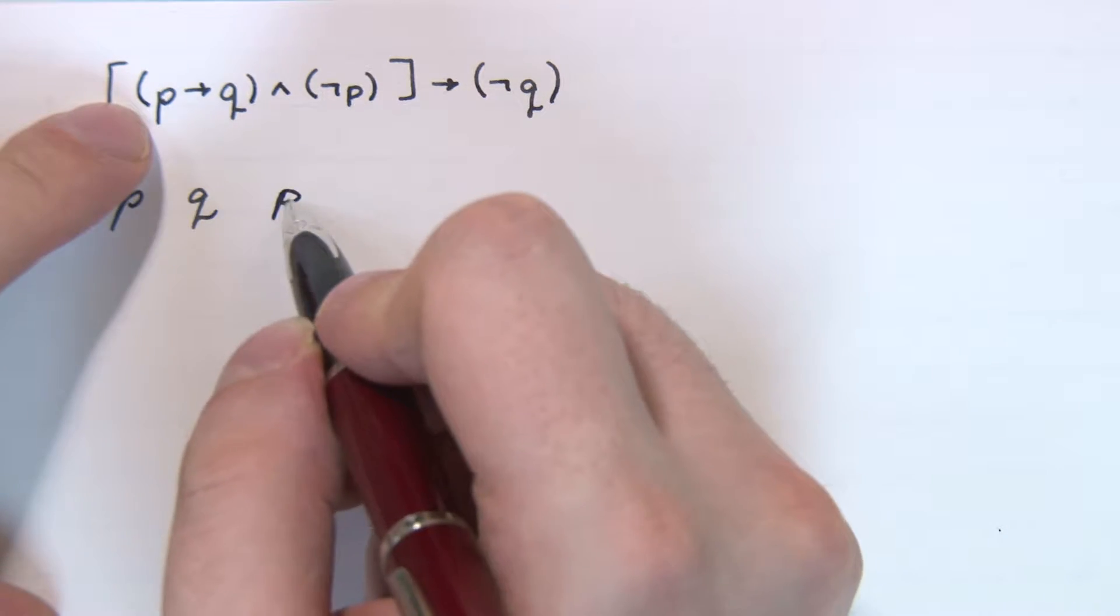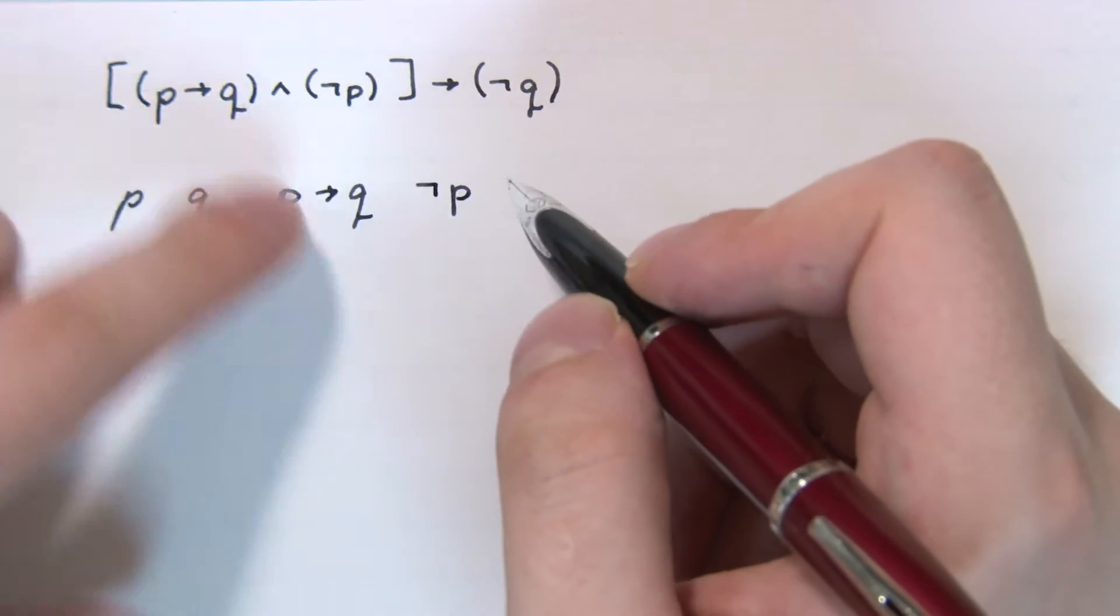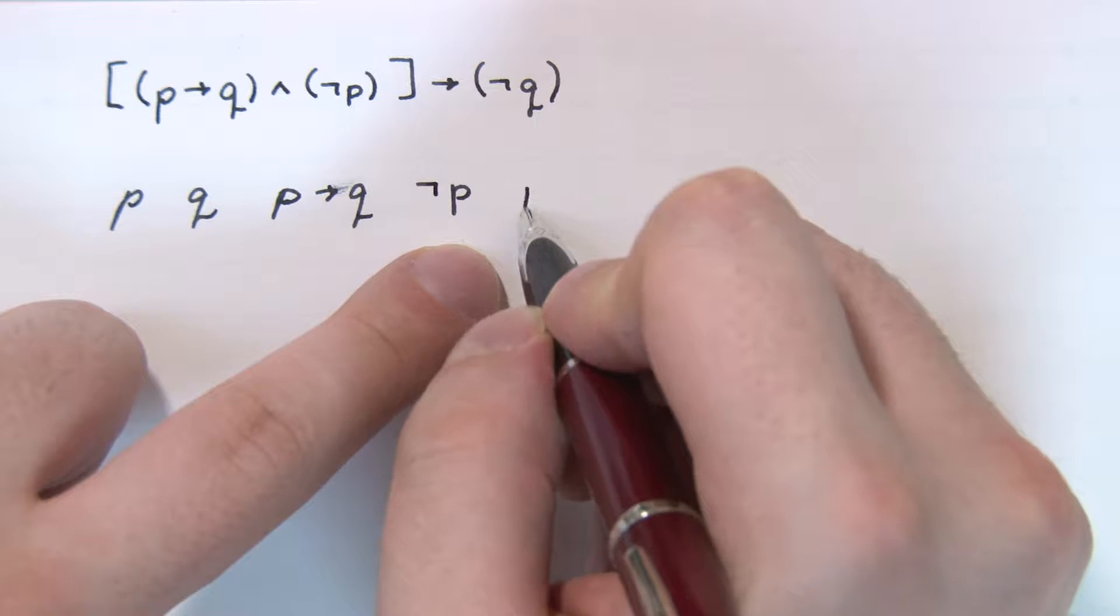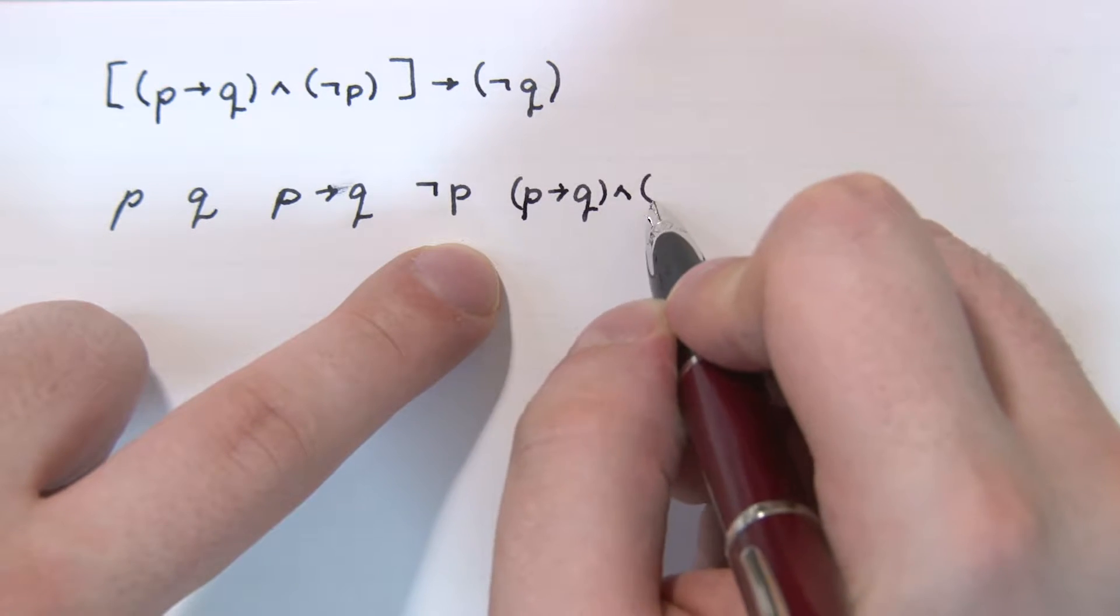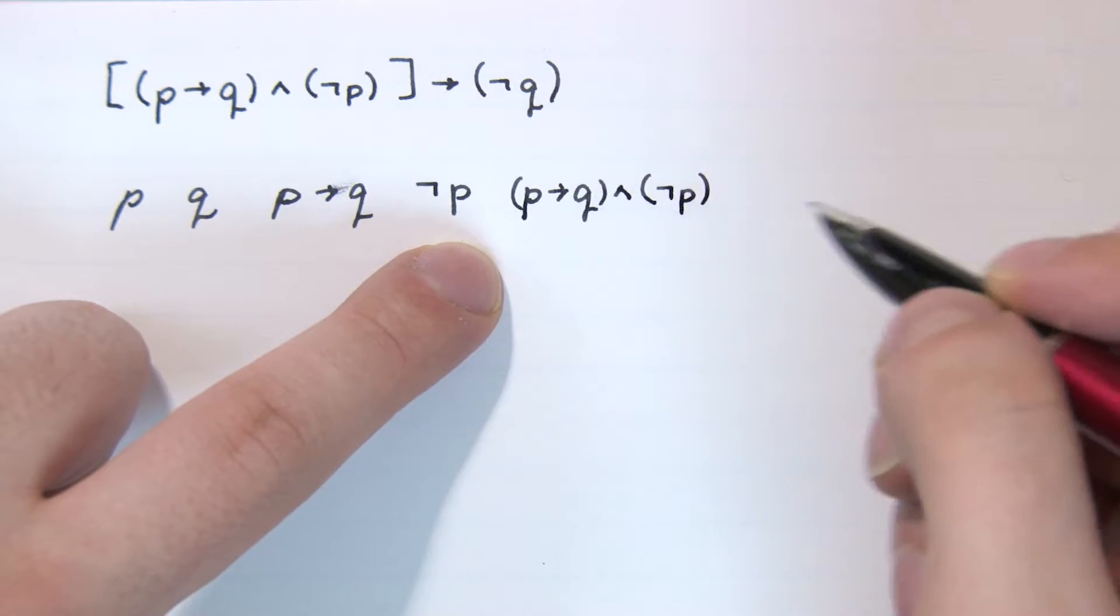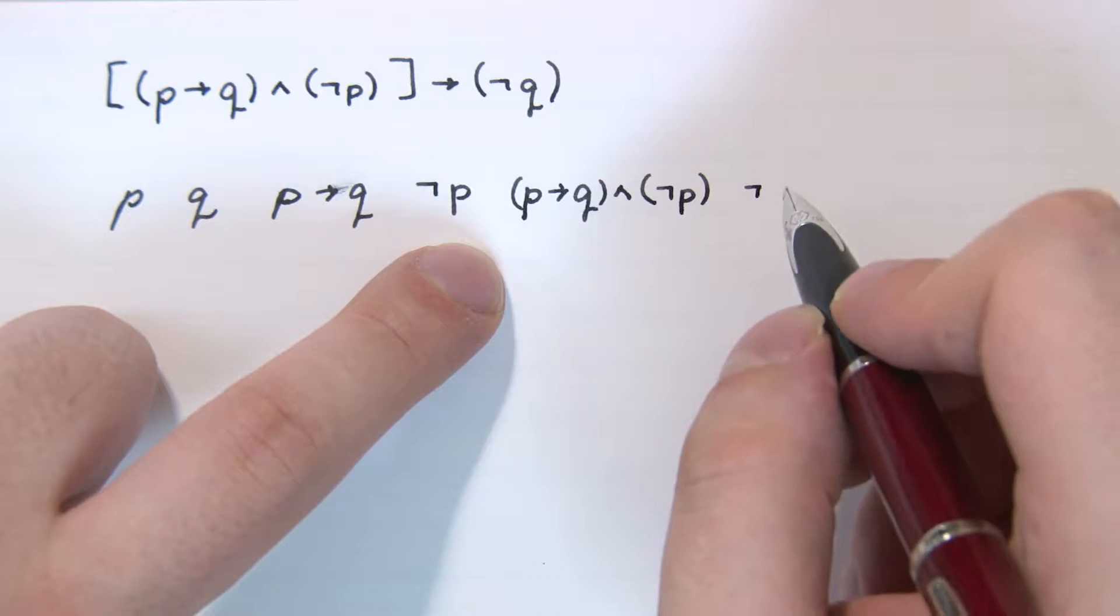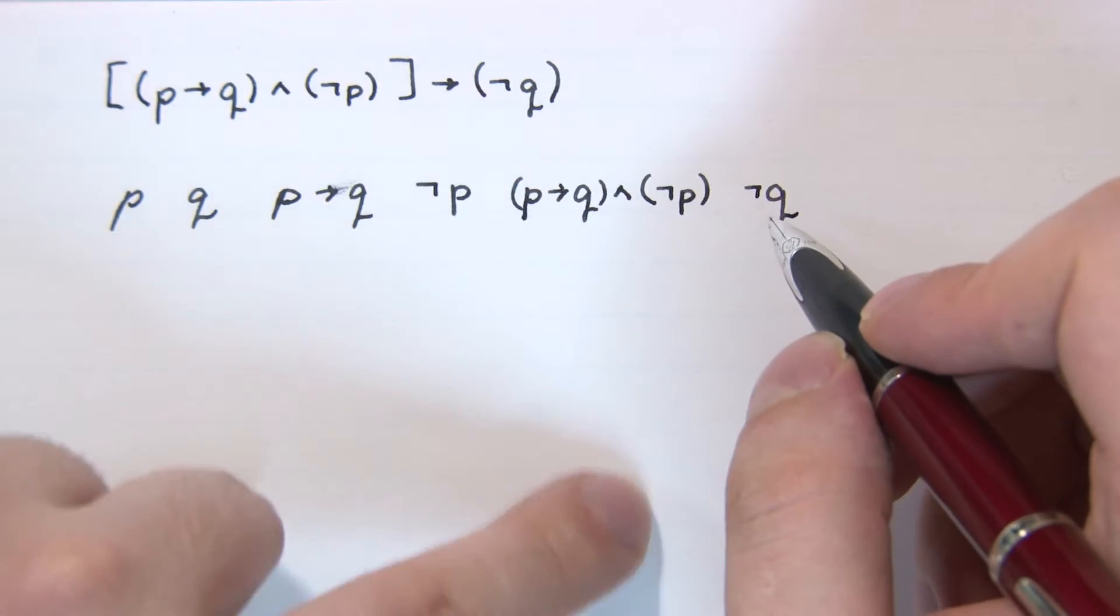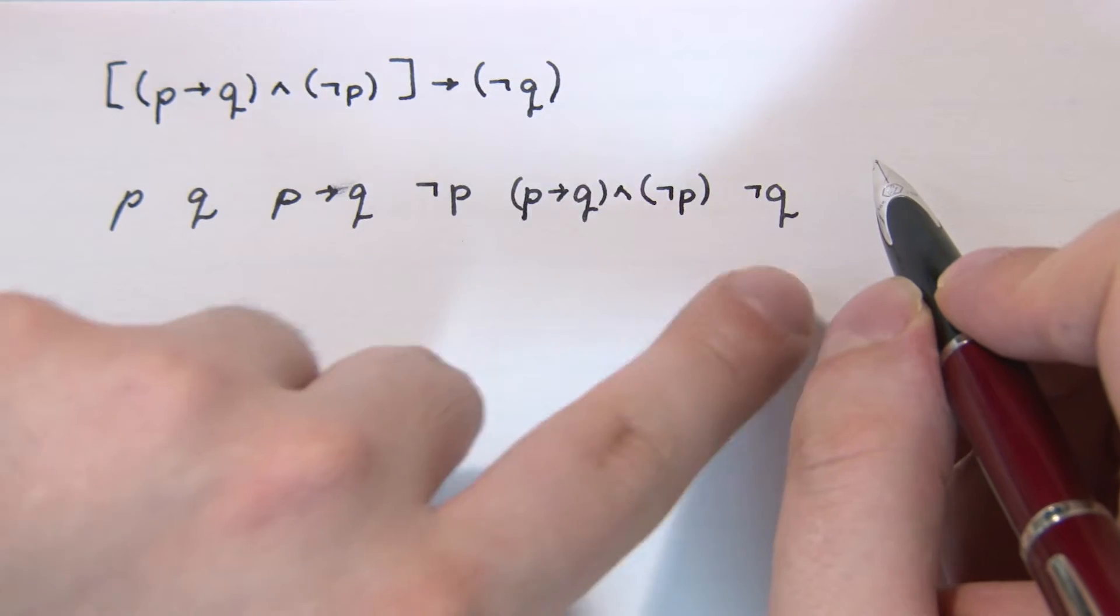We got the implication here, we have the negation of P, we're going to use the conjunction, and then we have the negation of Q. Then what we're going to do is take this column and this column and use the implication on it.